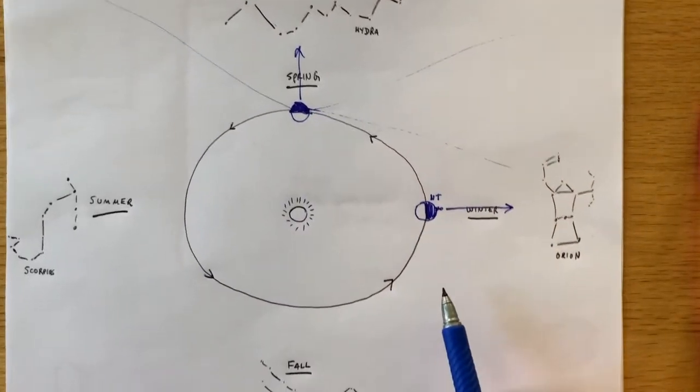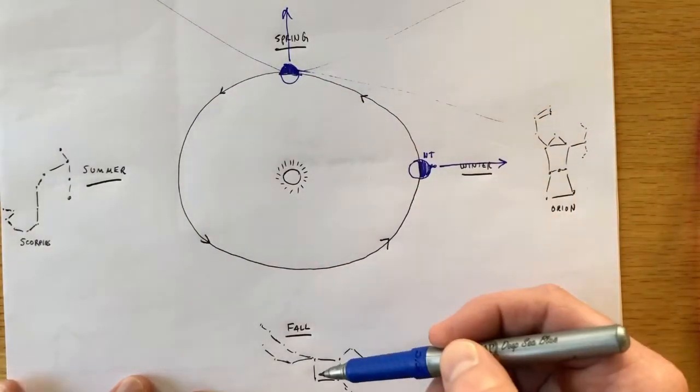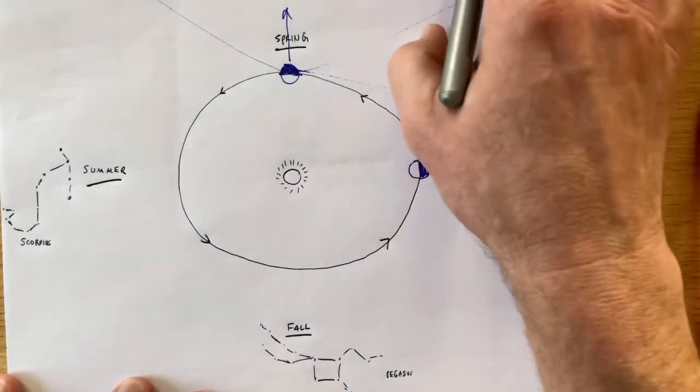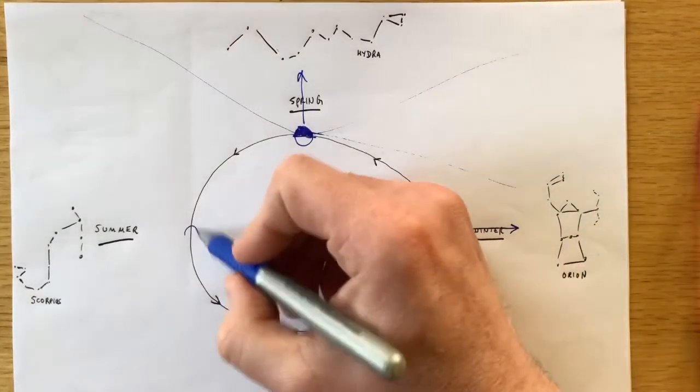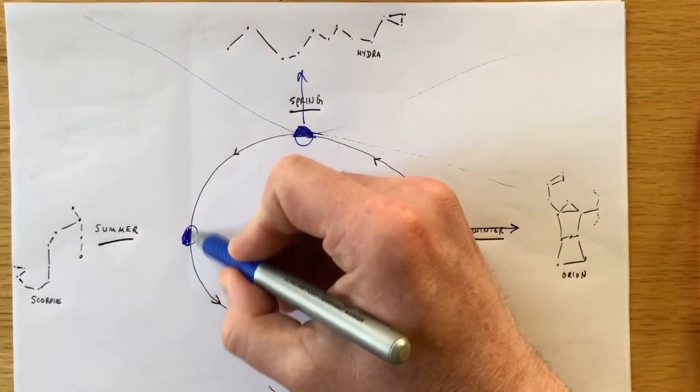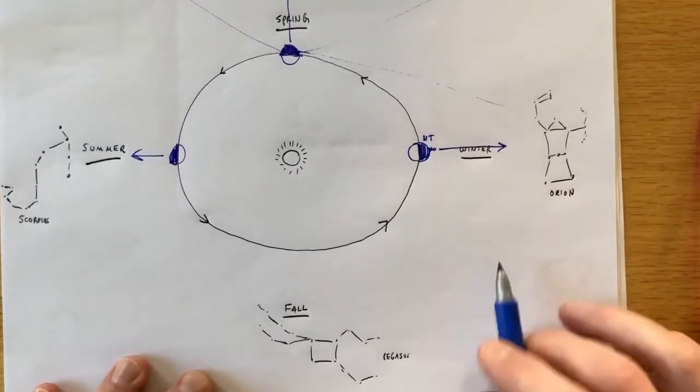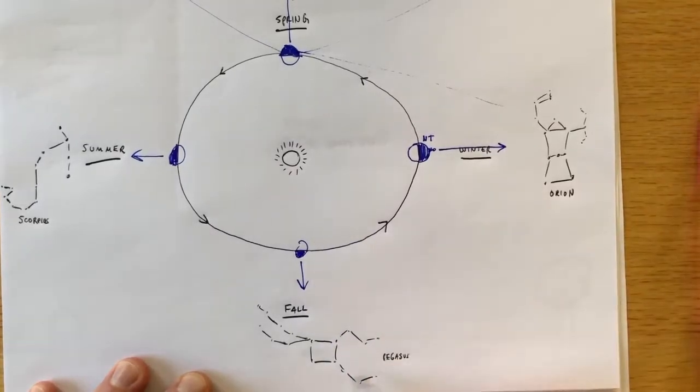Now, if you look to the other direction, could you possibly see Pegasus down here? No, because you'd have to look through the Earth and through the Sun again. So you're limited to whatever direction the dark side of the Earth is facing during any given season. During the summer, the dark side of the Earth is facing Scorpius. And when you get over here to fall, the dark side of the Earth is facing out towards Pegasus.